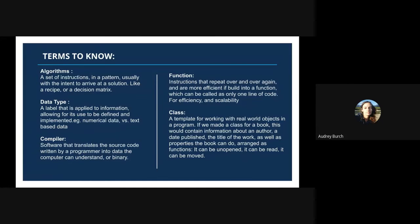A class refers to a template for working with real-world objects in a program. We're going to use an analogy — a full library of books, where the book itself is a universal concept, the book class. This class would contain information about every single author, every date published, and every title within an entire library. But if we just make one class for a book and instantiate it each time, we can create book objects for every book in the library.